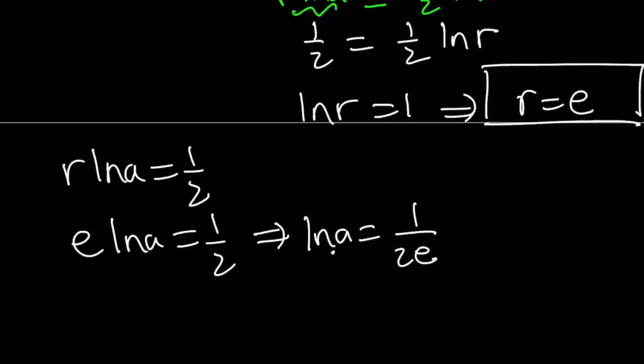But this is base e. So a becomes, by using definition of logs or whatever you want to use, a becomes e to the power 1 over 2e. Don't worry about the value of that number. I'm going to show you a graph that doesn't move. And then you'll get the idea. But that is the a value that we've been looking for.